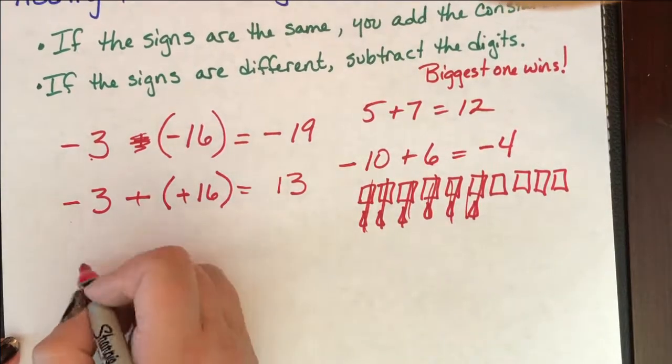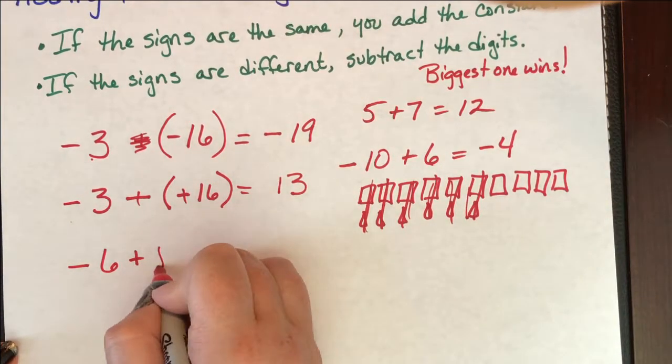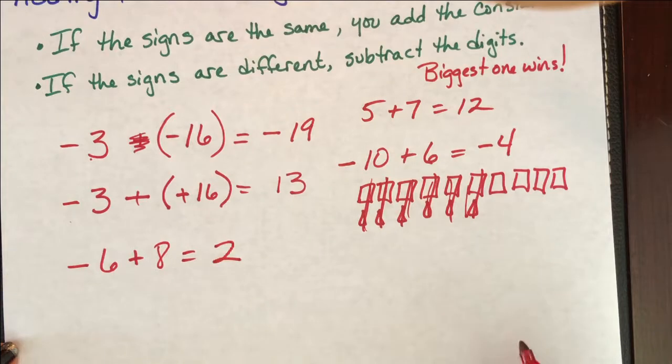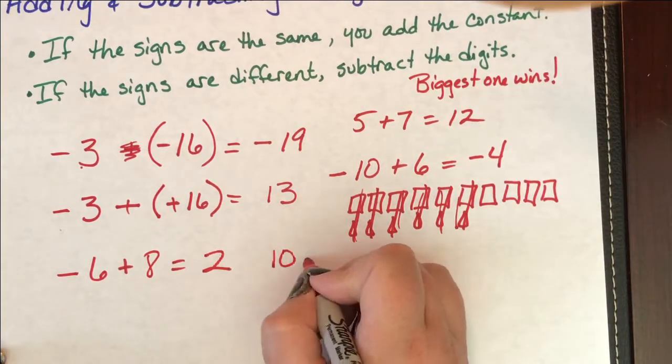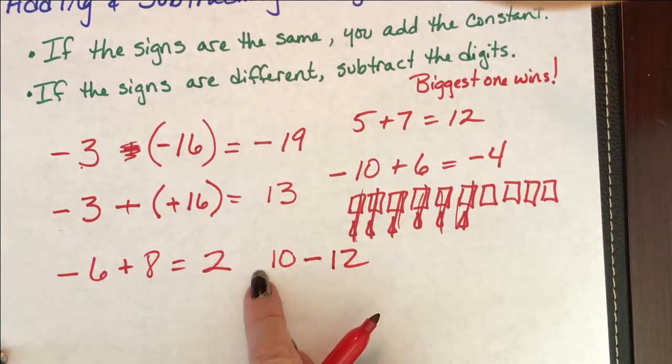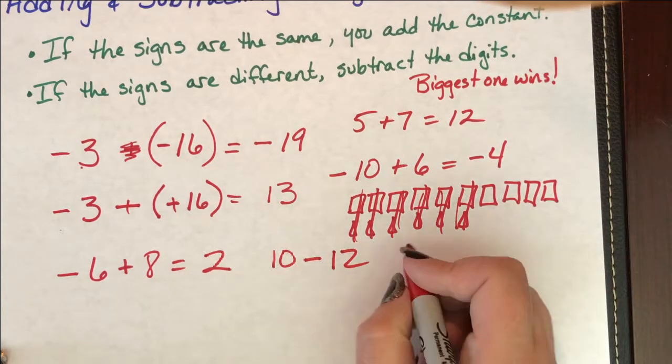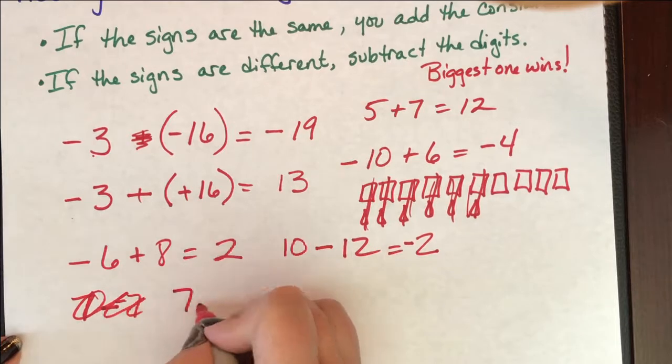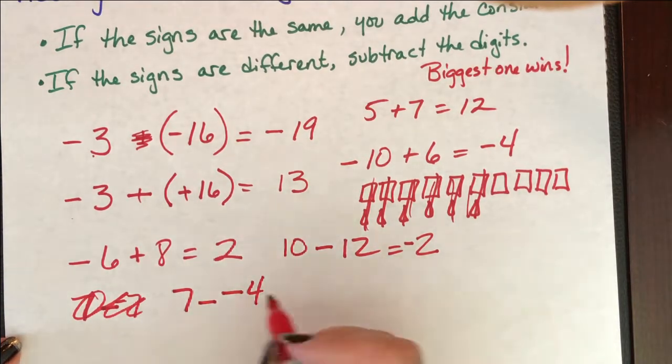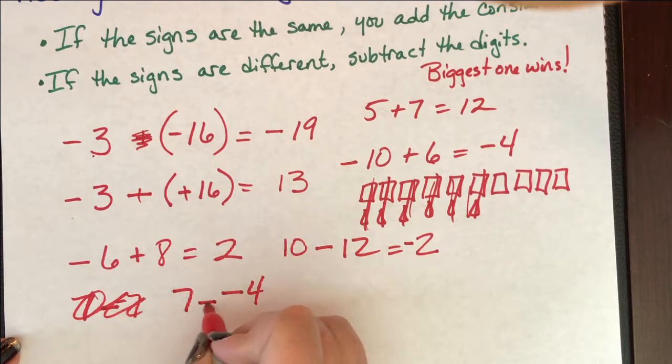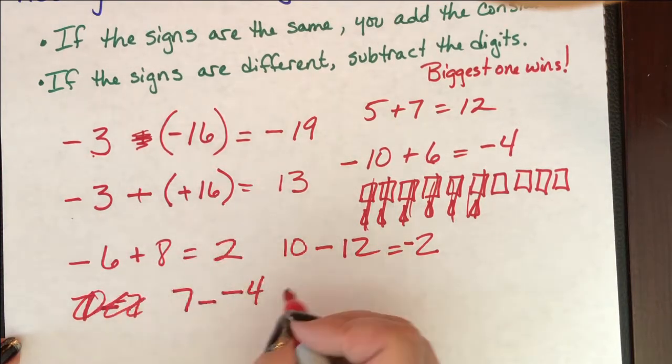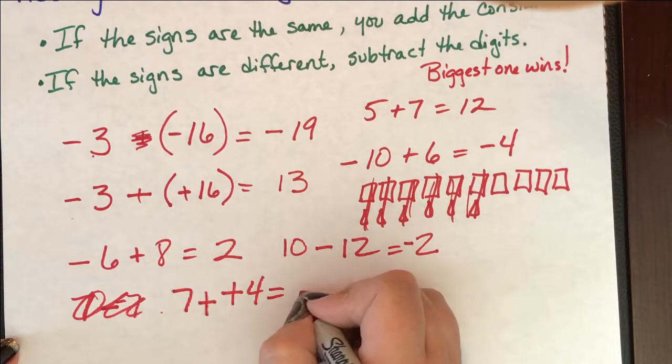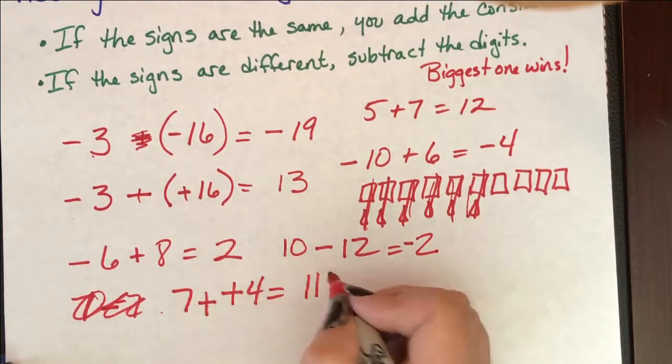So let's do this faster. Negative six plus eight. The signs are different. I subtract. The biggest one wins. This answer is positive. 10 minus 12. The signs are different. This is a positive number. The signs are different, so I subtract. And the biggest one wins. My answer is negative. Seven minus negative four. Negative and a negative together cancel each other out. Minus a negative is doing a double U-turn. You go dink, dink. And now I have a positive seven that I'm combining with a positive four. Both my signs are the same. I add. Still, biggest one wins. This answer is going to be positive.